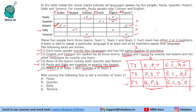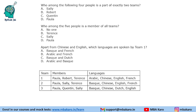Now we can answer the questions. Who among the following is not a member of Team 2? Team 2 is Paula, Sally, and Terence — so Quinton is not a member. Who is part of exactly 2 teams? Sally is part of Team 2 and Team 3, Robert is in only 1 team, Quinton is in only 1 team, and Paula is in 3 teams — so the answer is Sally. Who is a member of all teams? Paula is present in all teams. Apart from Chinese and English, which languages does Team 1 speak? Arabic and French.